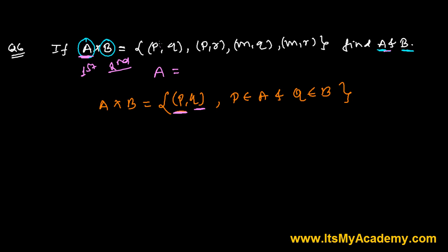So set A represents here all the first element: P, P, M, M. But in theory of set, what we have learned is that the repetition of the elements is not allowed. Here P is repeating twice, M is repeating twice. So finally you can write that it is P, M. So the set A is {P, M}.